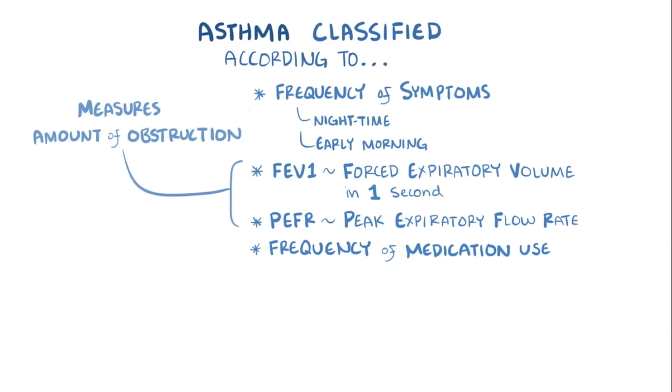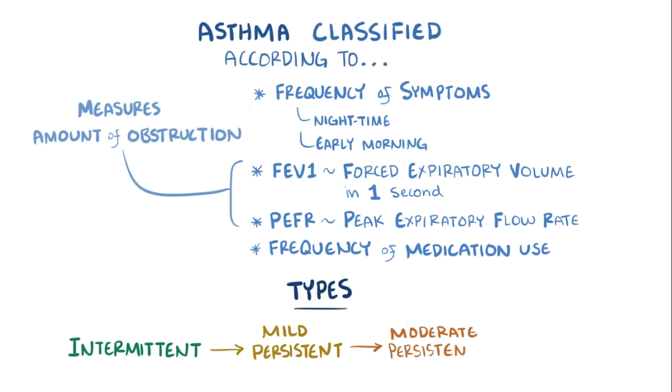From least to most severe, the types of asthma are intermittent asthma, mild persistent asthma, moderate persistent asthma, and finally severe persistent asthma.